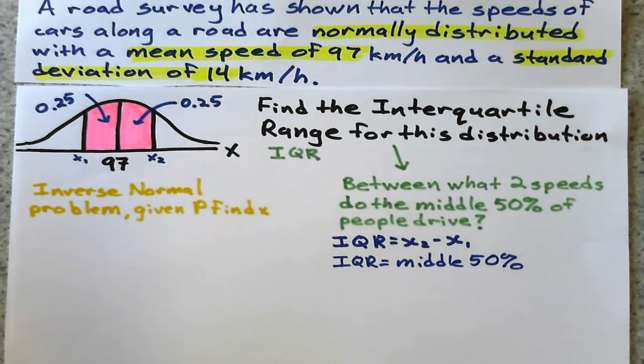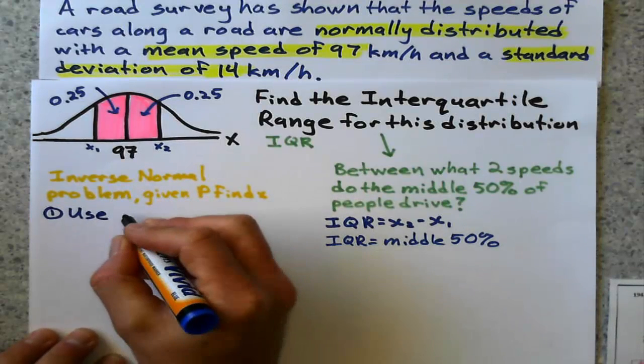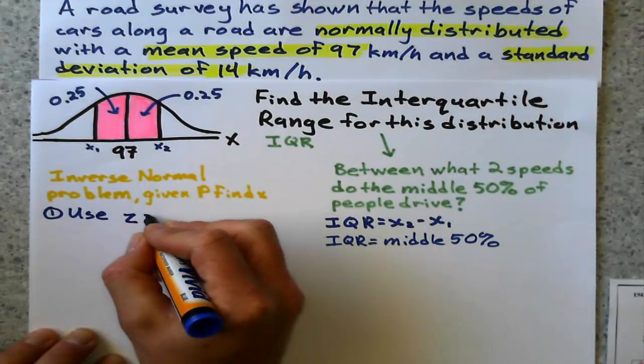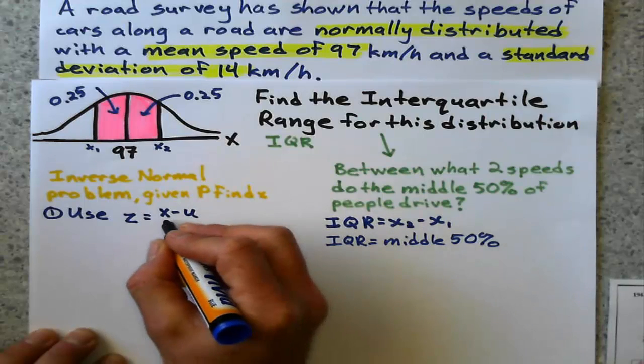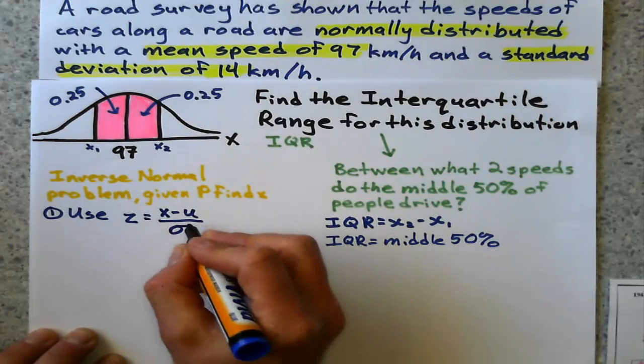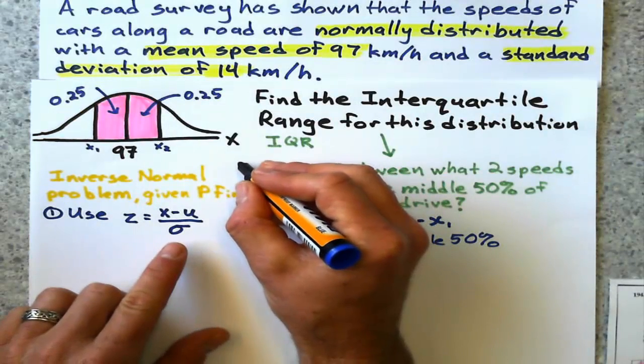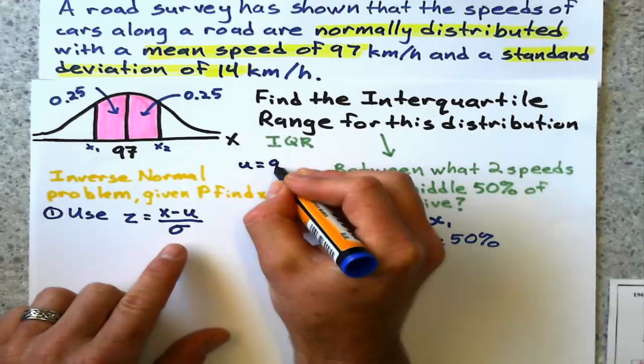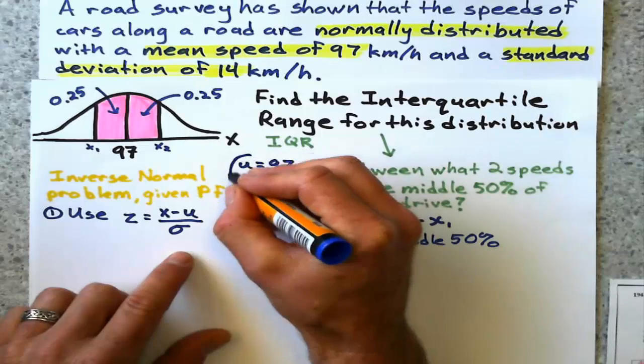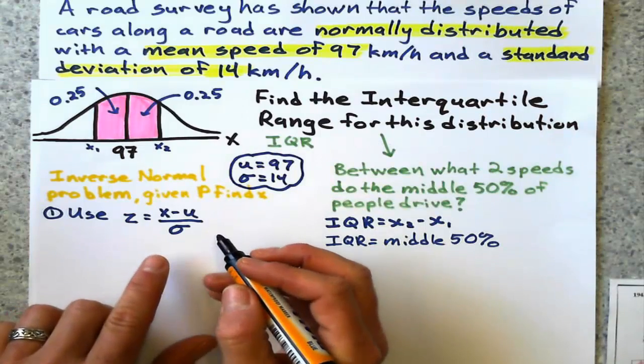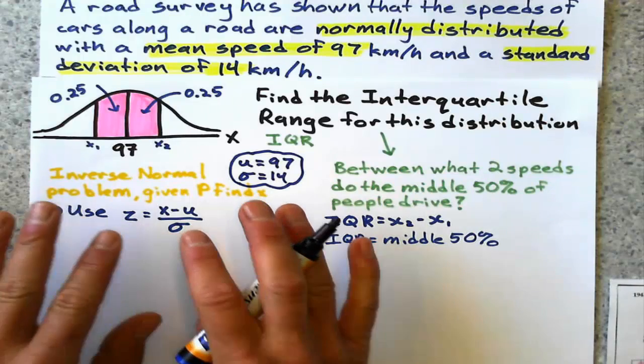My first step: if we're going to do anything with normal distribution, we're going to use the Z formula, which is Z equals the measurement minus the mean divided by the standard deviation. In our case, the mean is 97 and the standard deviation is 14.